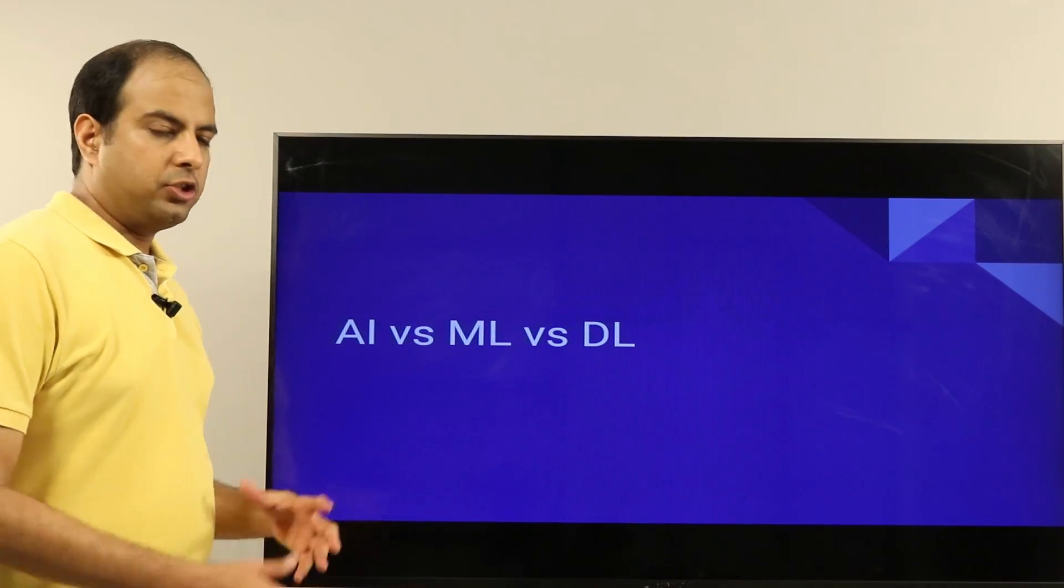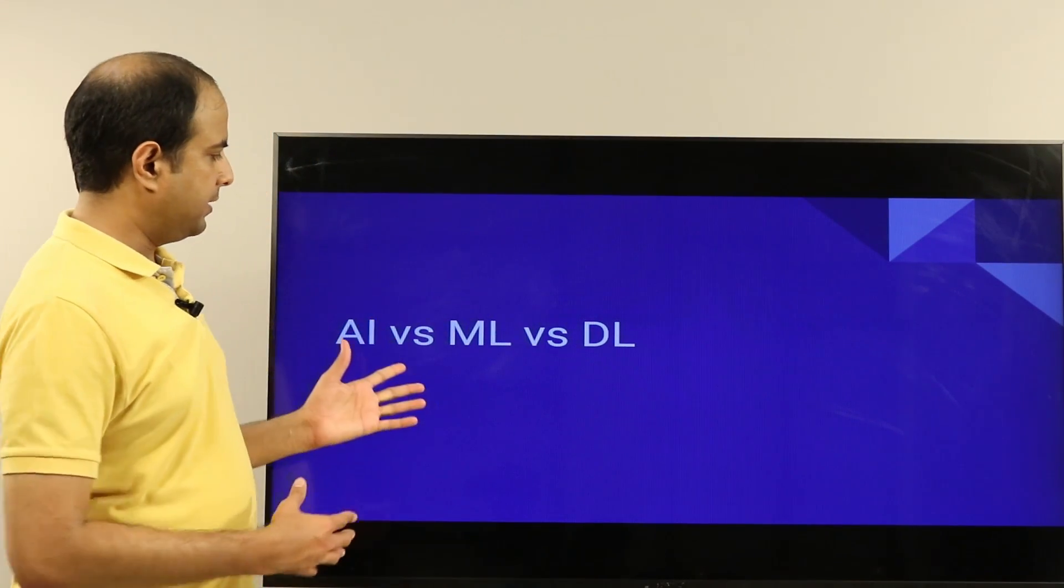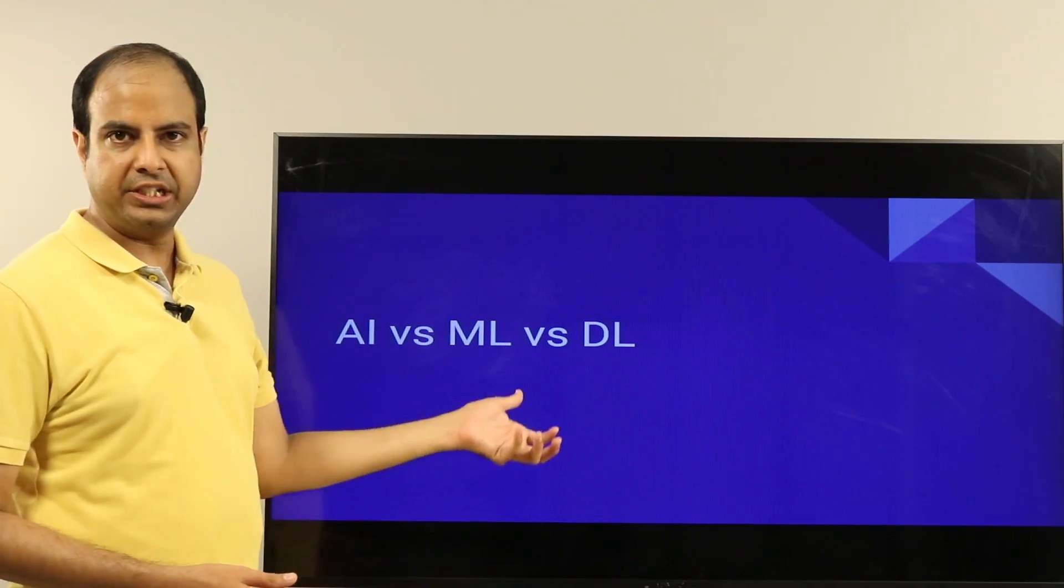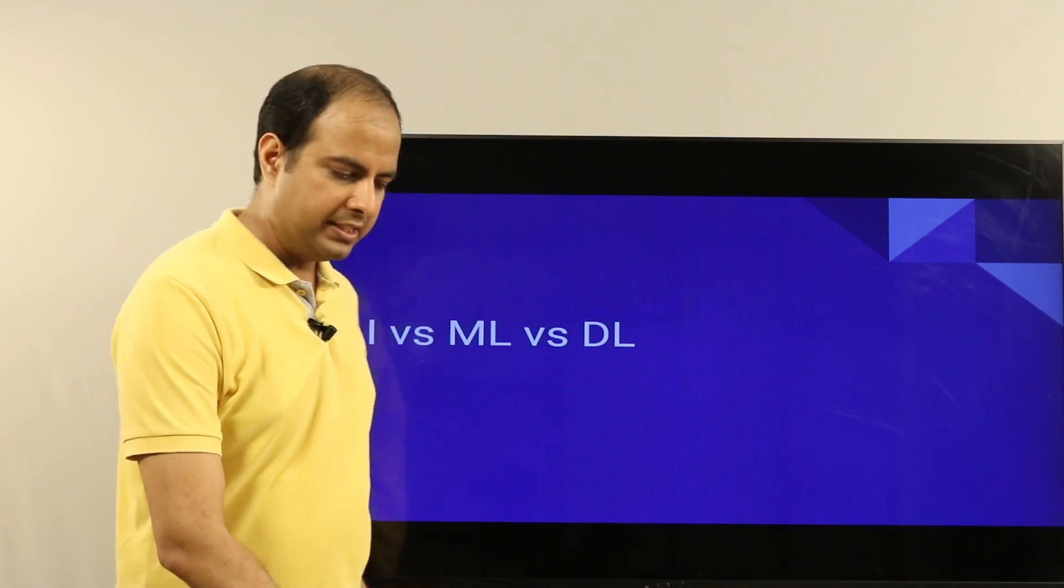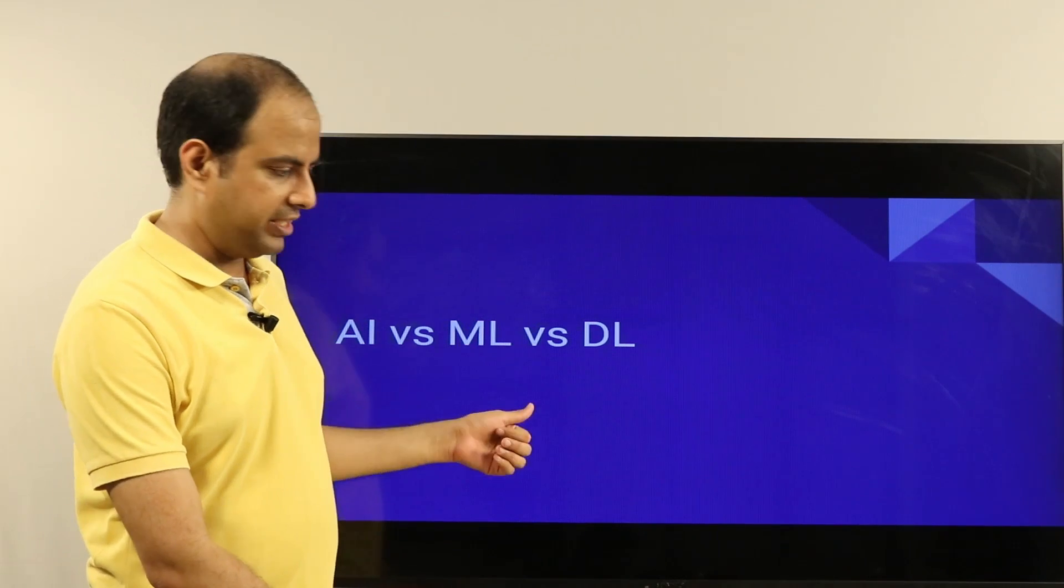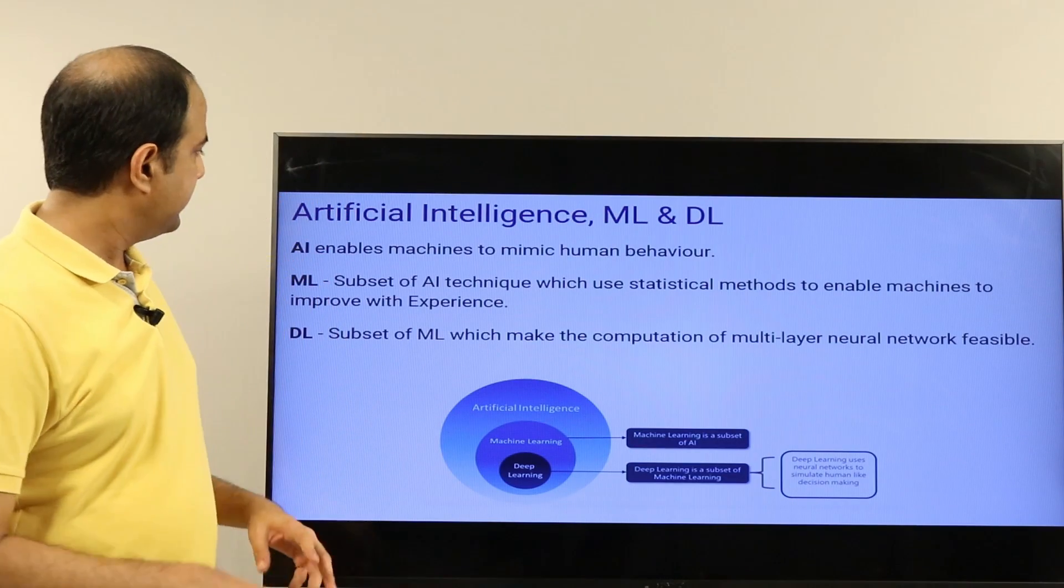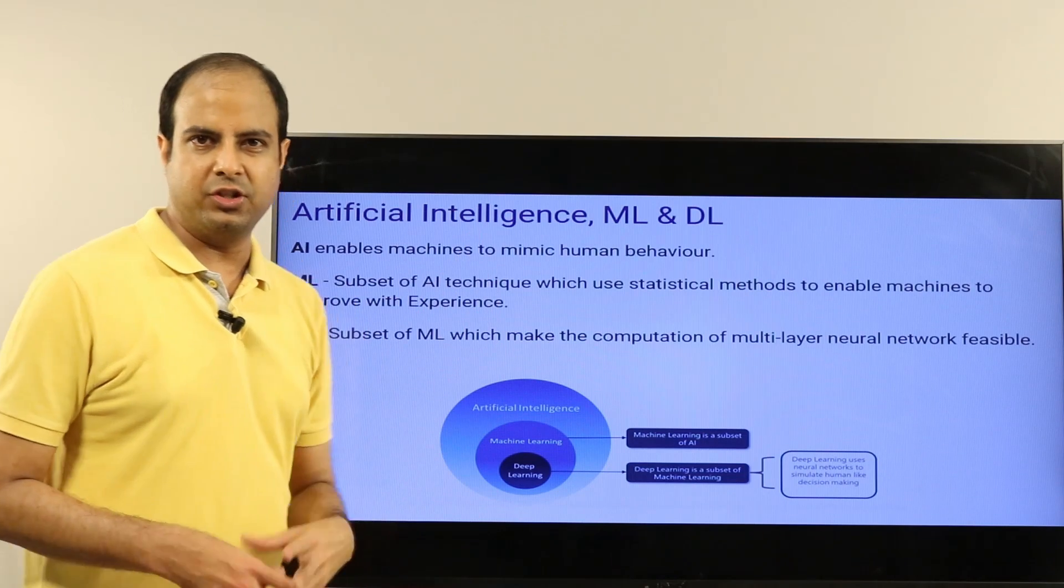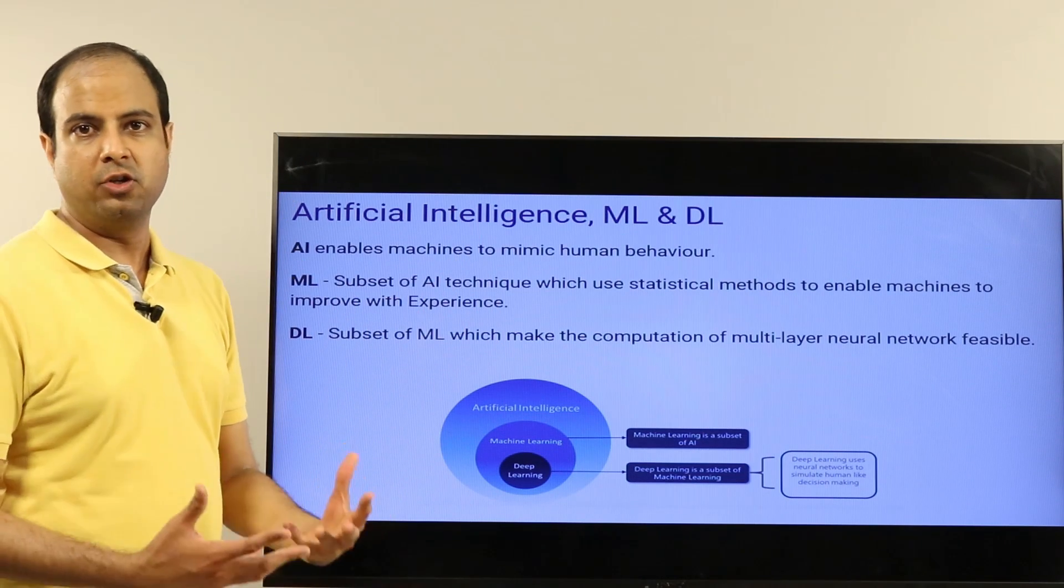In this video I'll talk about the differences and how these three things are related to each other: AI (Artificial Intelligence), ML (Machine Learning), and DL (Deep Learning). AI enables machines to mimic human behavior, so the goal of AI is to build a robot which does everything like a human.